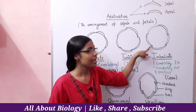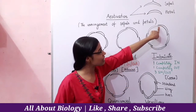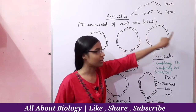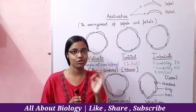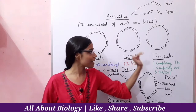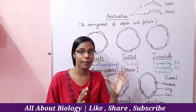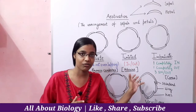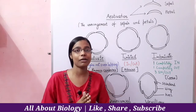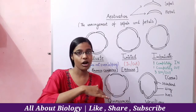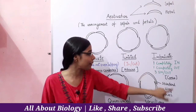As you can see, this petal has one margin under and one margin on the outside. In Imbricate Estivation, one petal is completely outside, another petal is completely outside, and the remaining three petals each have one margin inside and one outside. An example here is the Cassia family.